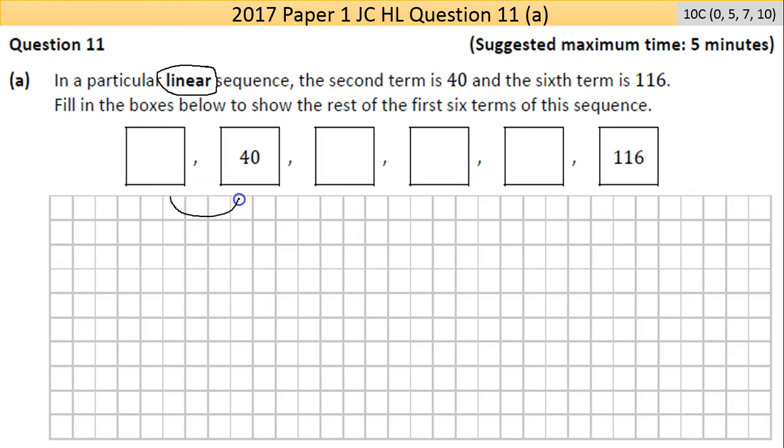So if it goes up a certain amount, we need to find out what that amount is. There's a jump here, a jump here, here, here, and here. So there's one, two, three, four jumps between 40 and 116.